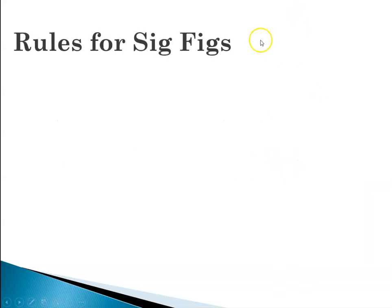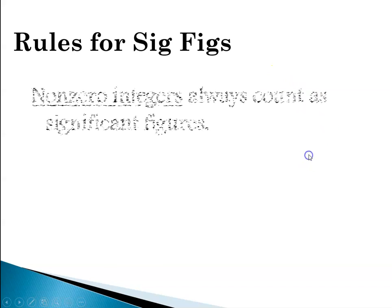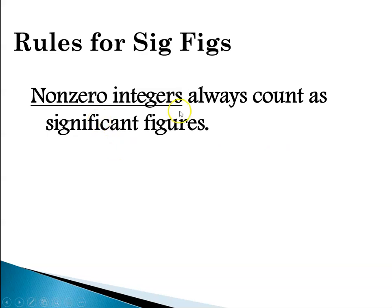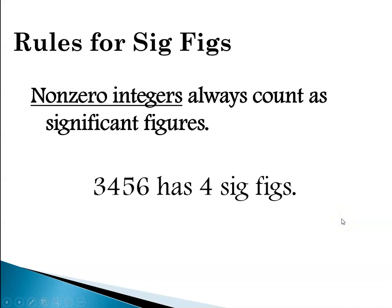There are specific rules for reporting significant figures. First: non-zero integers always count as significant figures. For instance, the number 3,456 has four significant figures — all of the non-zero integers count.